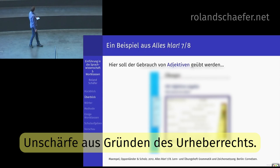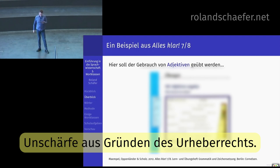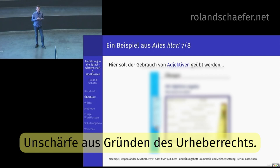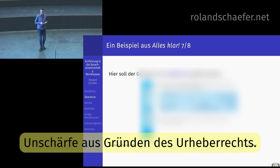Um das zu verdeutlichen, zeige ich ein Beispiel aus Alles klar für die siebte, achte Klasse, wo der Gebrauch von Adjektiven geübt werden soll. Die Anweisung ist: Lies die Anzeige eines Veranstalters für Jugendreisen, überlege, wohin die Wörter aus der Randspalte passen könnten, und setze sie mit der richtigen Endung ein. Also zwei Sachen: Such den richtigen Kontext für diese Adjektive und setze sie in die richtige Form. Ich komme am Ende der Sitzung darauf zurück, was mit dieser Aufgabe das Problem ist, warum sie eigentlich daneben geht.